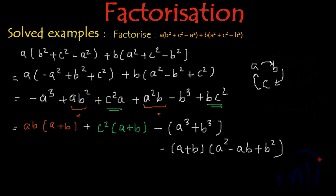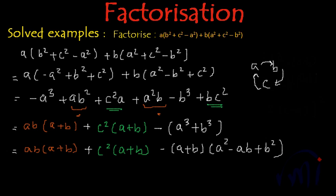Let's rewrite all the other terms as they are: AB multiplied by A plus B, plus C squared multiplied by A plus B. Now A plus B is present in every term — here we have A plus B, here we have A plus B, here we have A plus B, and here we have A plus B. So A plus B can be taken common.